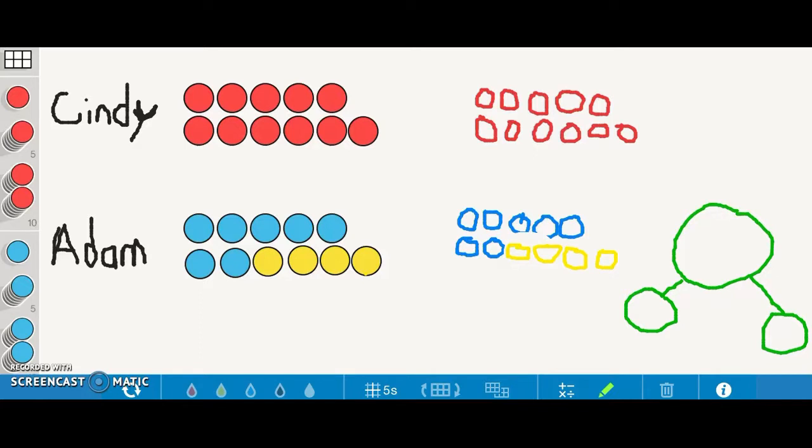By already using our concrete and pictorial model, we can see that the whole is 11 and one part is 7. We found the other part is 4. We can see that 7 and 4 is the same as 11.